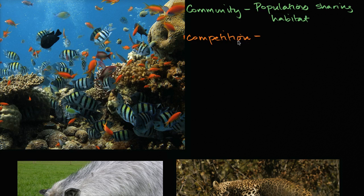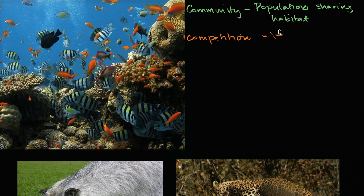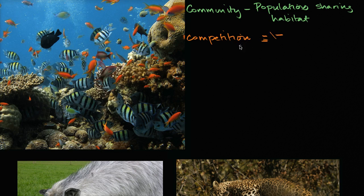When people talk about inter-specific interactions, you'll often see a minus/minus notation — a negative sign slash a negative sign. That means when two species are in competition, the more you have of one, it's going to have a negative effect on the other, and vice versa. If I'm a plant competing with another plant and it's taking my light, more of it is a negative impact on me. If we eat the same thing, more of me eating your food has a negative impact on you, and vice versa.